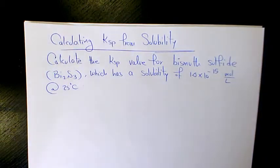In this video I want to show you how to calculate KSP from solubility. This example says calculate the KSP value for bismuth sulfide Bi2S3, which has the solubility of 1.0 times 10 to the power of negative 15 mole per liter at 25 degrees.